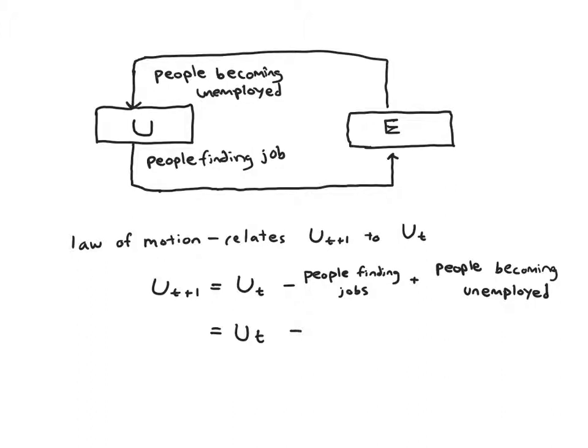So we're just going to say some fraction f of people find jobs each period, and because of that f times Ut people find a job - they're no longer unemployed. Similarly, we're going to have a really simple model for the number of people who become unemployed. It's going to be some fraction s are separated from their job each period.